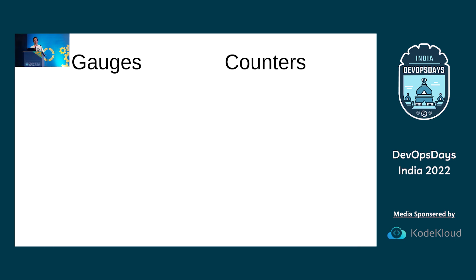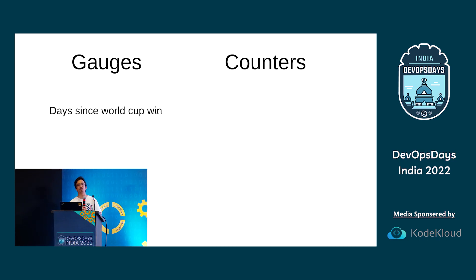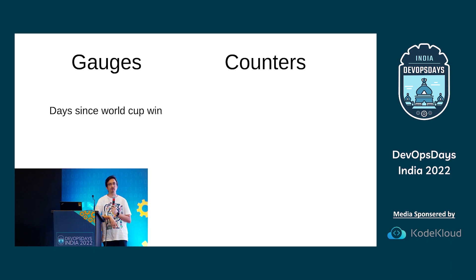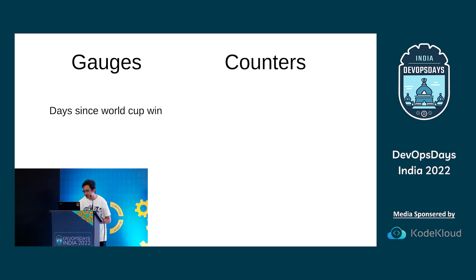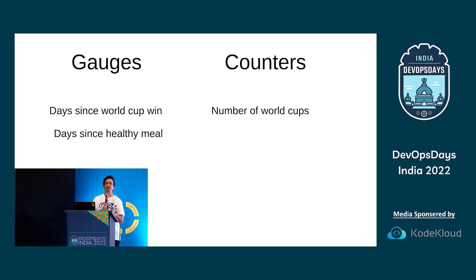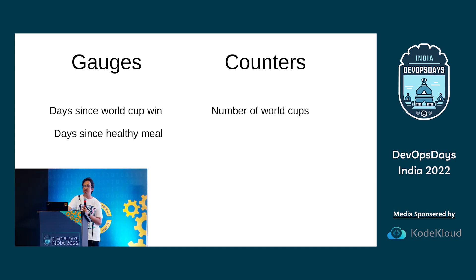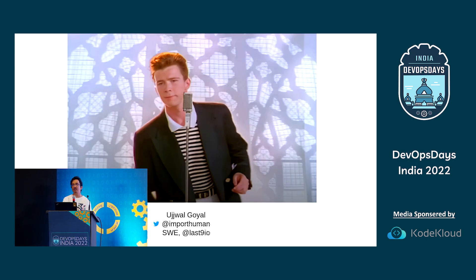To summarize: gauges go up or down; counters only go up. For example, a gauge: how many days since India won the World Cup? Has it been over 10 years? Yes. Will it reset to zero? I sincerely hope so. Counters: number of World Cups — we can only go up from here. Another gauge: days since a healthy meal. I know I've been eating out for two weeks; you may have had a healthy meal just today. Counters, only up: number of days since you were happy with your life.